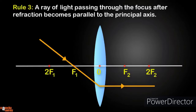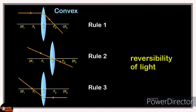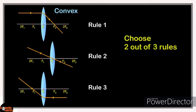Let's place the three rules we have learned for convex lens on our concept board. Can you see that rule three is exactly the opposite of rule one? It's due to the reversibility of light. For drawing ray diagrams, you can choose any two rules that are convenient.